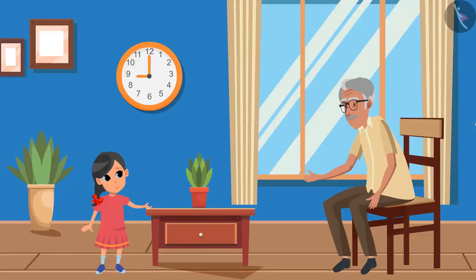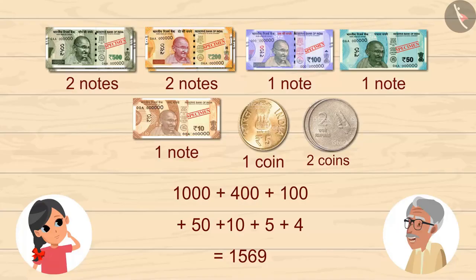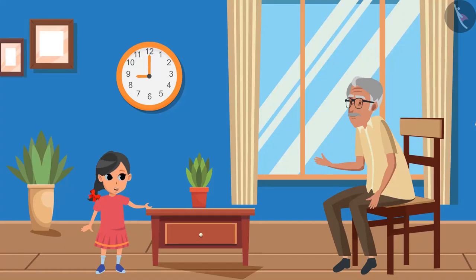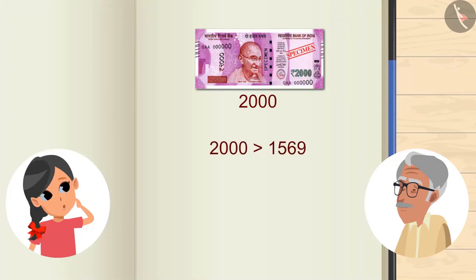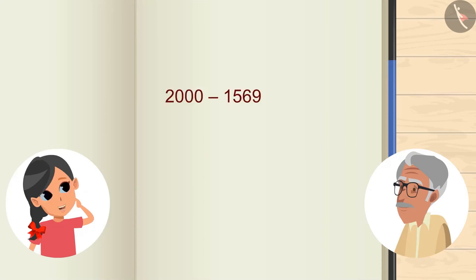Grandpa praises Gudi but notes they used many notes. He asks if they can make 1569 using fewer notes. Gudi wonders how. Grandpa suggests using a 2000 rupee note. Gudi points out it's more than 1569, and grandpa asks how much more. Subtracting 1569 from 2000, they are left with 431 rupees change.